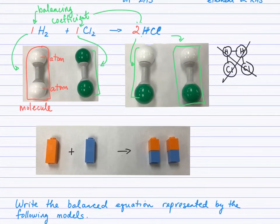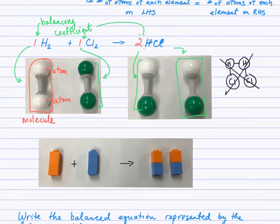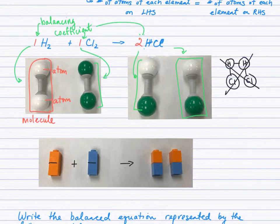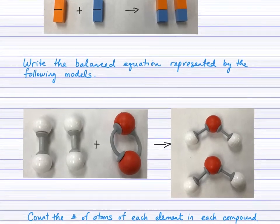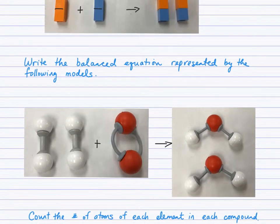Maybe you don't have a modeling kit at home — you could use Lego, paperclips, or any object. Here I've used Lego. There are two orange pieces stuck together for the two hydrogen atoms and two blue pieces stuck together for the two chlorines, and you can see they are forming 2HCl. Based on this modeled equation, try to write the balanced equation that I'm representing in these photos.